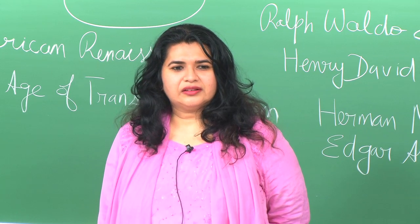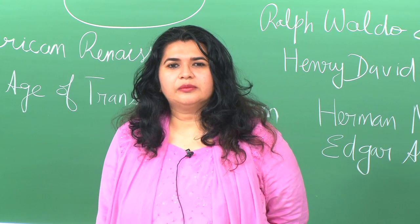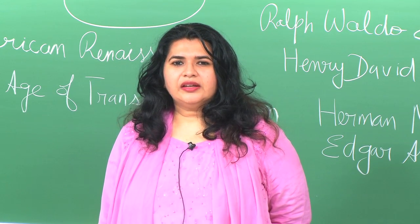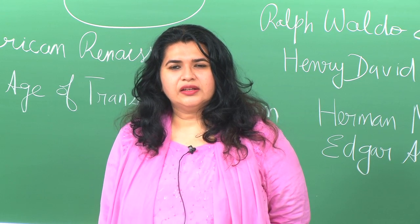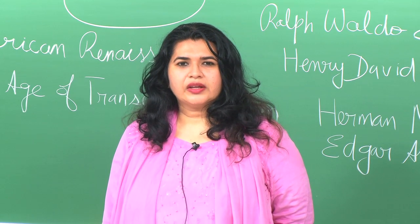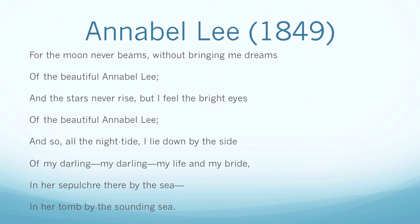Coming back to Poe's assertion that the death of a beautiful woman can be the key inspiration for a poem, let me read out a couple of lines from his celebrated Annabel Lee (1849). Poe himself lost his wife Virginia to tuberculosis, and his biographies tell us he was devastated after Virginia's death. From Annabel Lee: 'For the moon never beams without bringing my dreams of the beautiful Annabel Lee. And the stars never rise but I feel the bright eyes of the beautiful Annabel Lee. And so all the night-tide I lie down by the side of my darling, my darling, my life and my bride, in her sepulchre there by the sea, in her tomb by the sounding sea.'